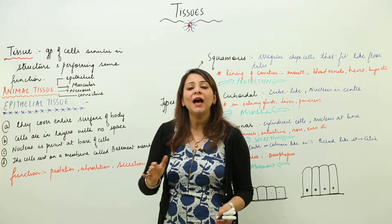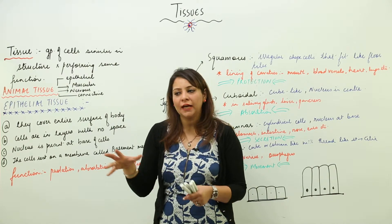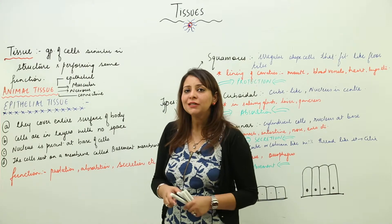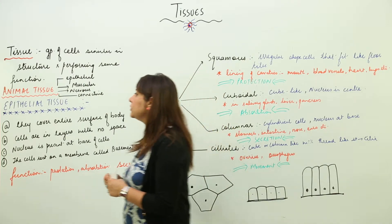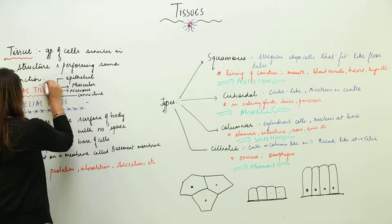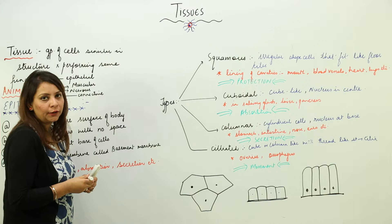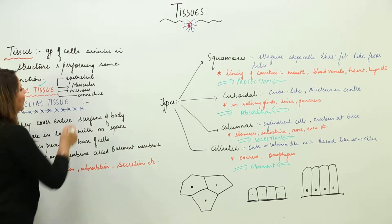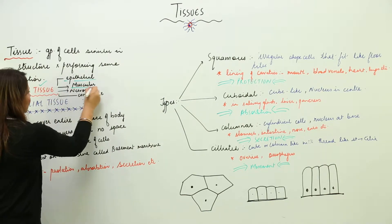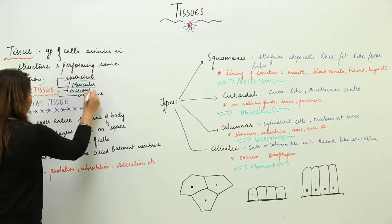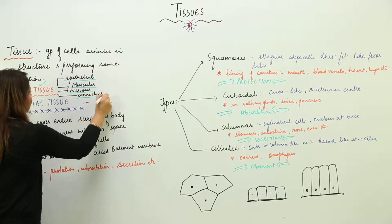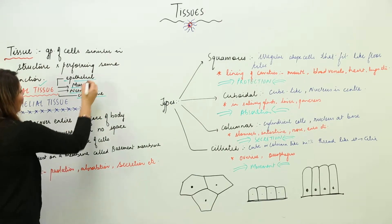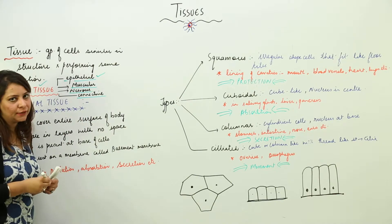We have different kinds of tissues present in both animal and plant bodies. First we are going to study about the tissues present in the animal body. The four basic tissues are epithelial, muscular, nervous, and connective.